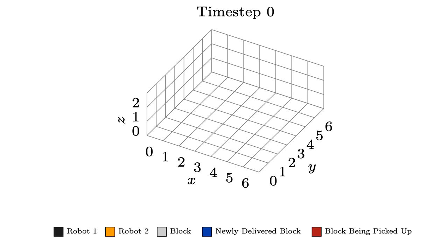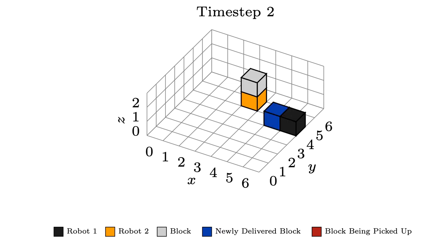Let's take a look at an example in more detail. At the beginning of the planning horizon in time step 0 the blocks world is initially empty — there is nothing in it. In time step 1 we have two robots coming in: a black robot coming in from the right and a yellow robot coming in from the far end. Both robots are carrying one block on top of them. In time step 2 the yellow robot proceeds into the middle while still carrying the block. The black robot puts down its block, shown in blue to highlight that it has just been placed in the current time step.